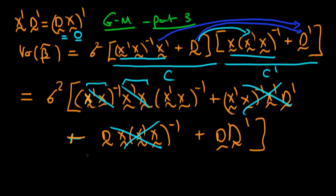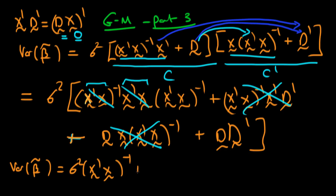So we can write out the variance of beta tilde as being equal to sigma squared times x primed x to the power minus 1, plus sigma squared times DD primed. This first term here is exactly what we got from our least squares estimator, so this is just the variance of the least squares estimator. So what about this second term?